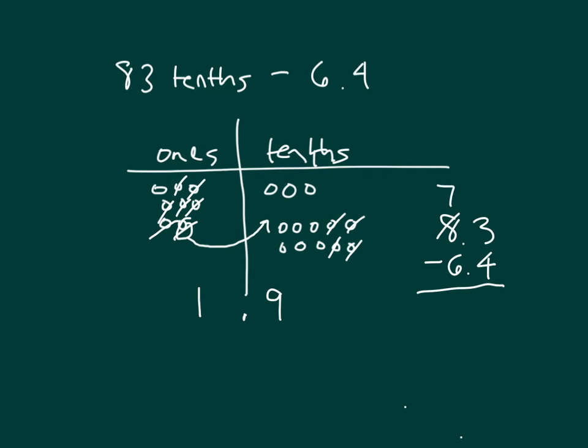8 becomes a 7 and then 3 can become 13. That's just like I had regrouped in my picture. 13 minus 4 is 9 and 7 minus 6 is 1. So my numbers approach matches what I did in my place value chart to solve this problem.